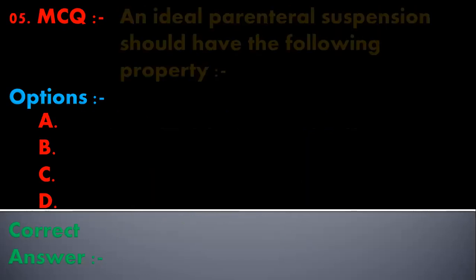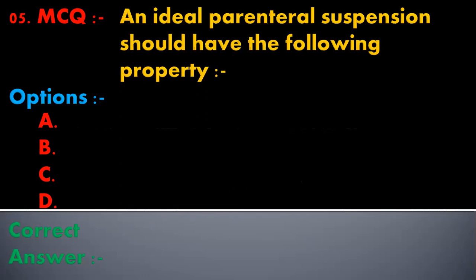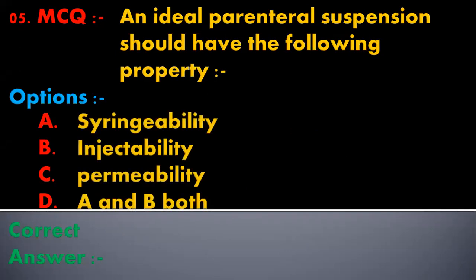The fifth multiple choice question is: an ideal parenteral suspension should have the following property — options are syringibility, injectability, permeability, or both A and B. The correct answer is both A and B. An ideal parenteral suspension should have syringibility and injectability.